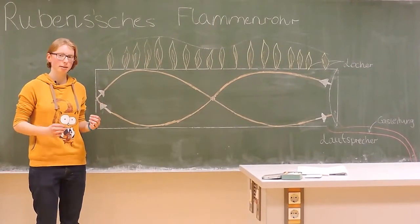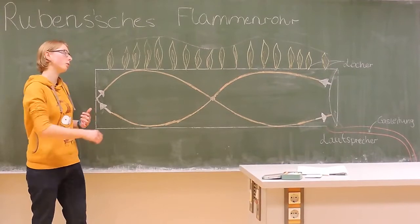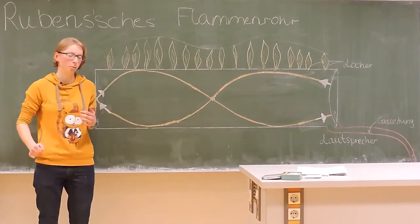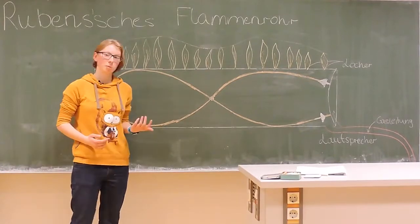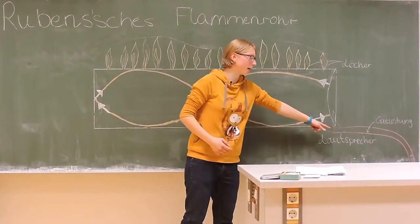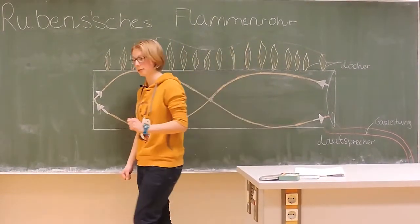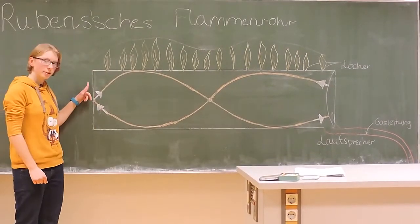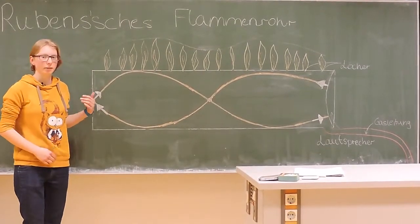This Rubens' flame tube consists of a tube with small holes on the upper side. The tube is filled with gas, which is ignited by a gas lighter at the holes. The tube is closed so that the sound waves can reflect.